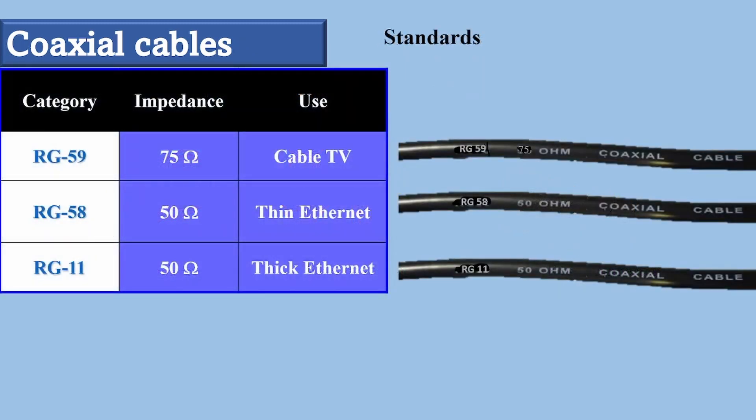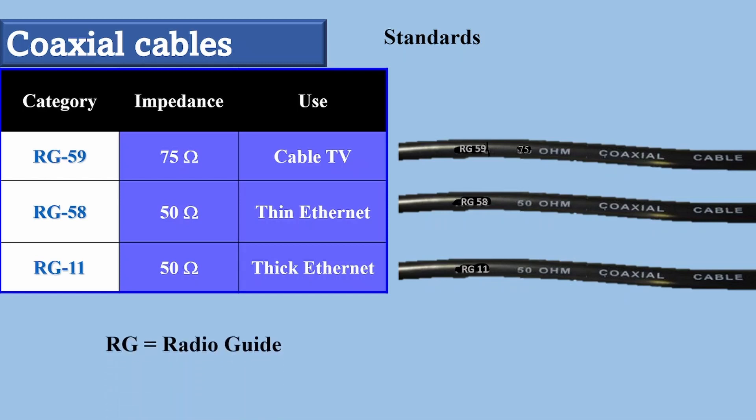Coaxial cables are categorized by their RG ratings, where RG stands for radio guide. Each RG number denotes a unique set of specifications including the wire gauge of the inner conductor, the thickness and type of the inner insulator, the construction of the shield, and the size and type of the outer casing. However, it's not easy to identify coax cables by just physically looking at them; the only way to identify them is by the label written on them.